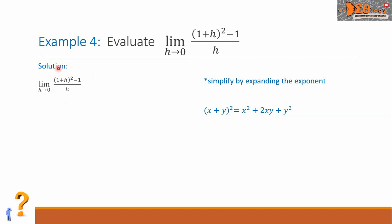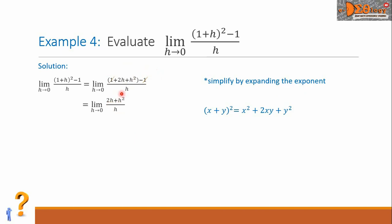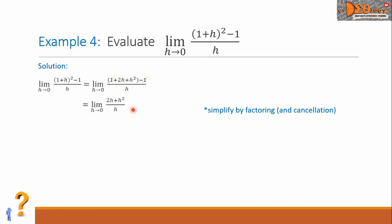We can expand our function to get 1 plus 2h plus h squared, minus 1, all over h. To simplify the numerator, we can see that the positive 1 and the negative 1 cancel each other out. Our function now becomes 2h plus h squared, all over h. At this point, we can simplify further by factoring and look for possible cancellation.